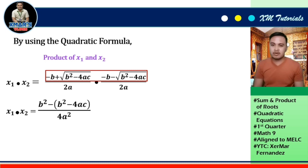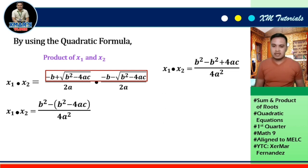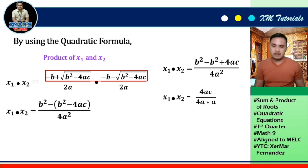We distribute -1 to (b² - 4ac), giving x₁ × x₂ = (b² - b² + 4ac) / 4a². Simplifying, b² - b² = 0, so we have x₁ × x₂ = 4ac / 4a². Factoring out a² in the denominator gives 4ac / (4a × a). Cancelling 4a, the only term left in the numerator is c and in the denominator is a. Therefore, x₁ × x₂ = c/a.